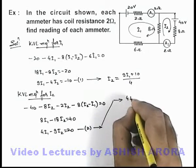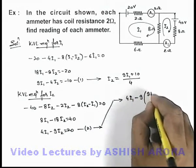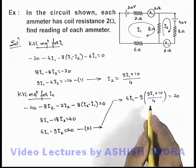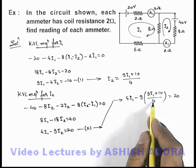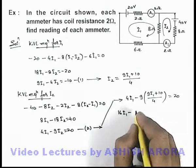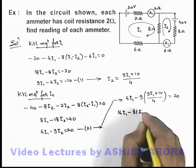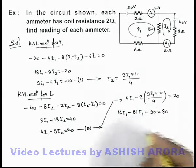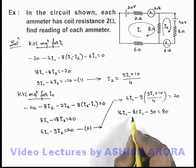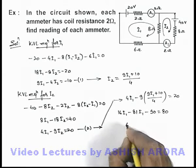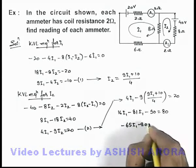I'm handling the second equation as 4i1 minus 9 times the value of i2, substituted as (9i1 + 10) divided by 4, equal to 20. If I simplify, taking the LCM to be 4, this will be 16i1 minus — 9 multiplied by 9 is 81 — 81i1 minus 90, equal to 4 multiplied by 20, which is 80. So if I simplify, 81 minus 16 will be 65, giving us minus 65i1 minus 90 equal to 80.